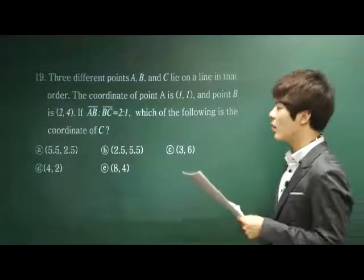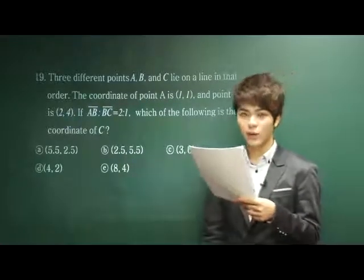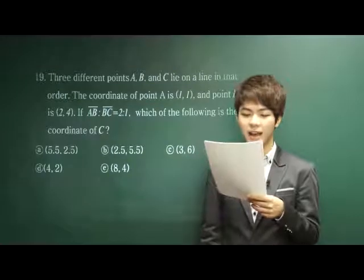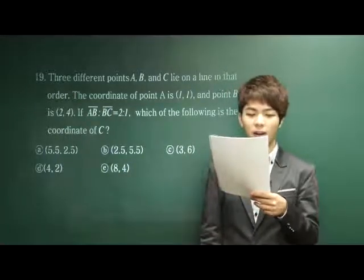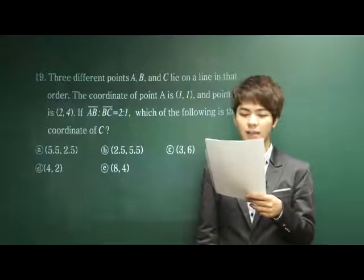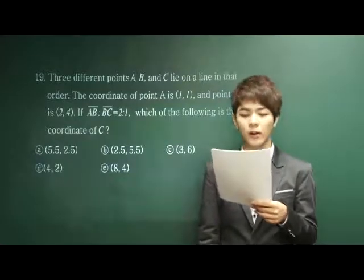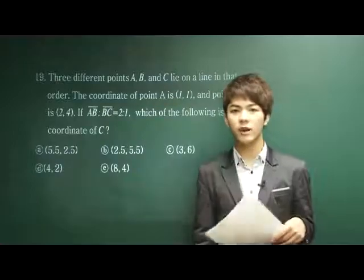The three different points A, B and C lie on a line in that order. Okay, so the coordinate of point A is (1,1) and point B is (2,4). If the ratio of the segment AB and BC is equal to 2 to 1, which of the following is the coordinate of C?